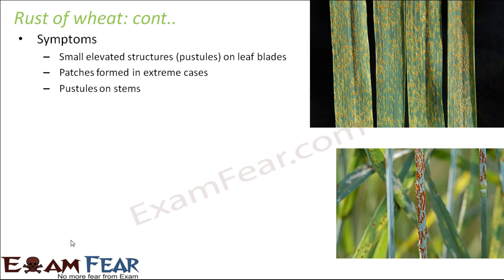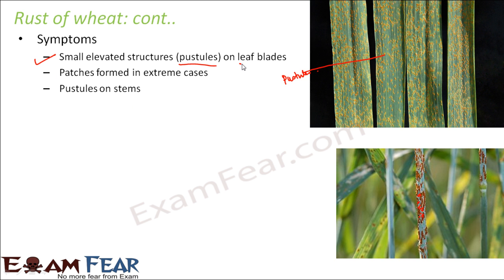Symptoms include small elevated structures called pustules on leaf blades. If you touch the surface of the leaf you can feel these elevations. In extreme cases, many pustules gather together to form patch-like structures. Pustules are not only seen on leaf blades but also on stems, as shown in the picture.